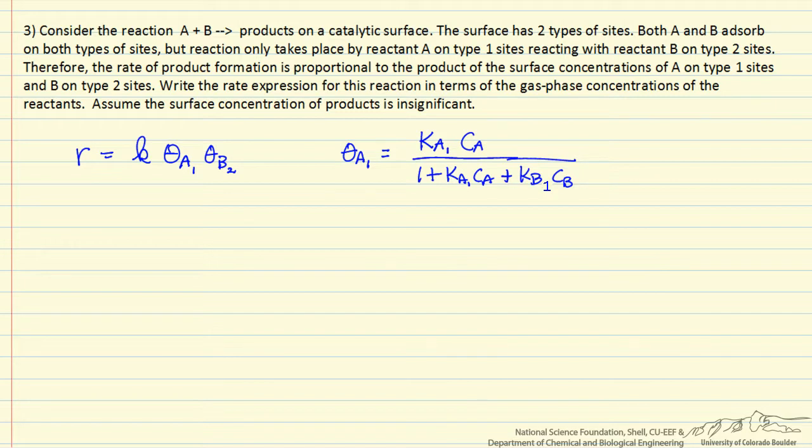We have the same type of expression for the concentration of B on sites II. These concentrations, remember, are the gas phase concentrations. We have adsorption equilibrium constants for A and B on the type II sites. The rate is just the product of these coverages times a rate constant.